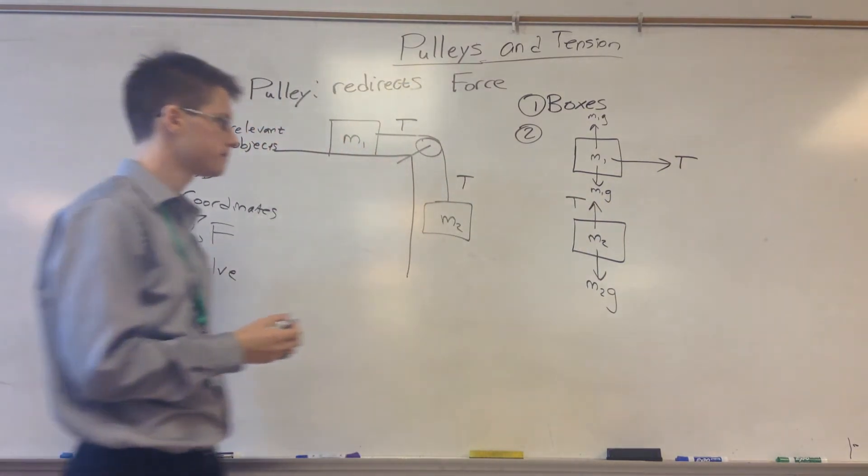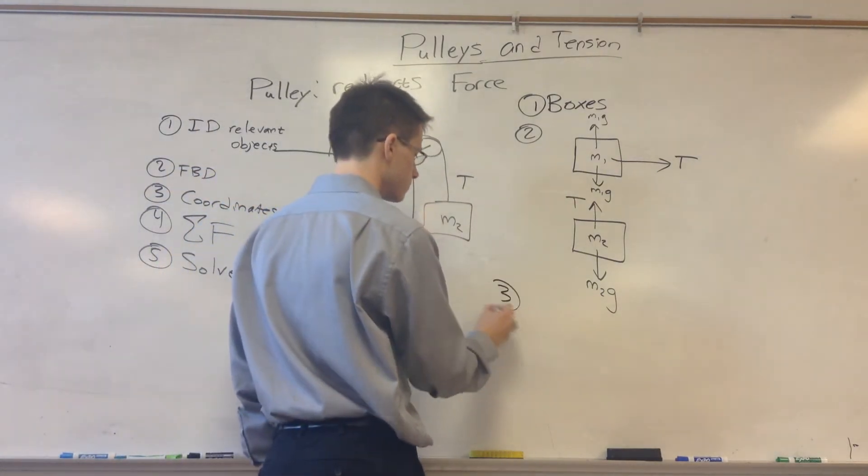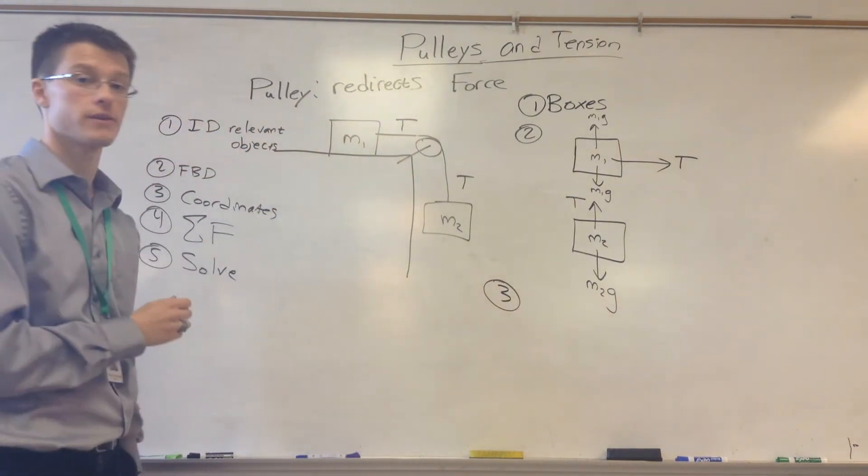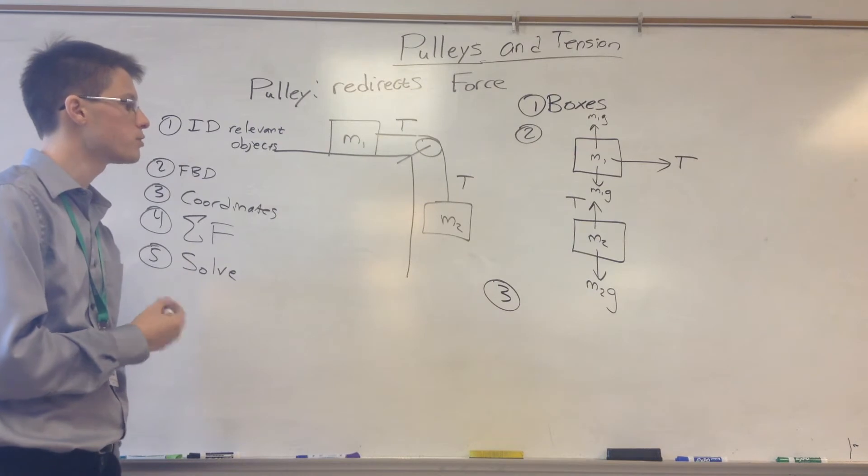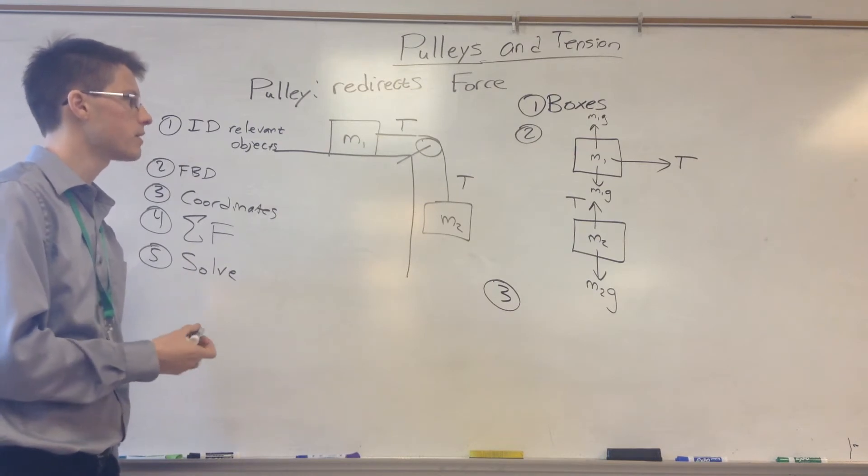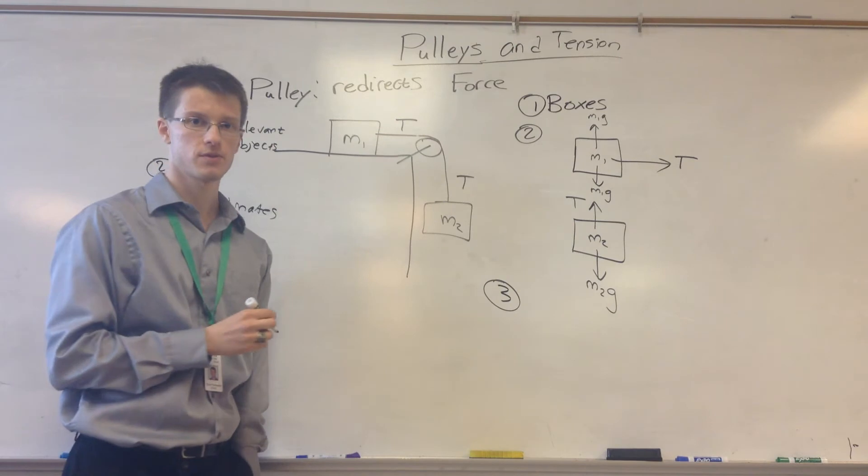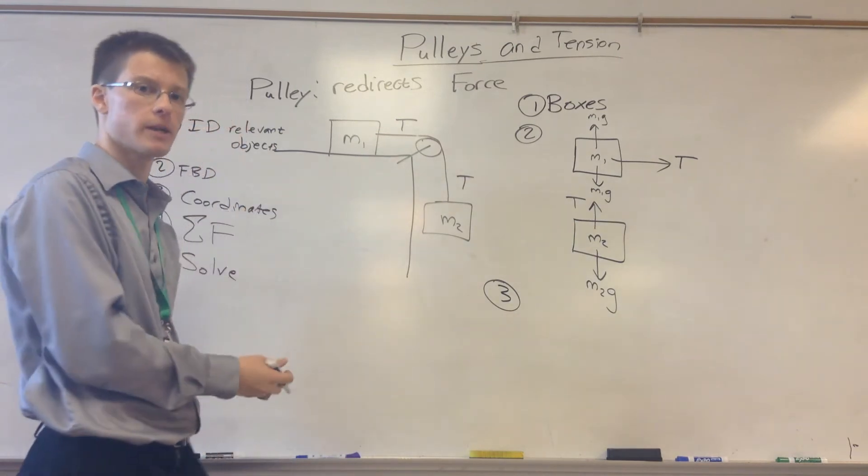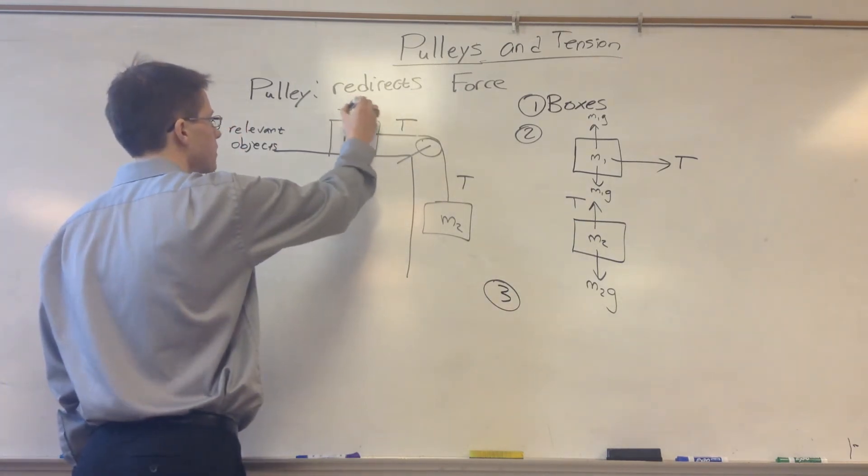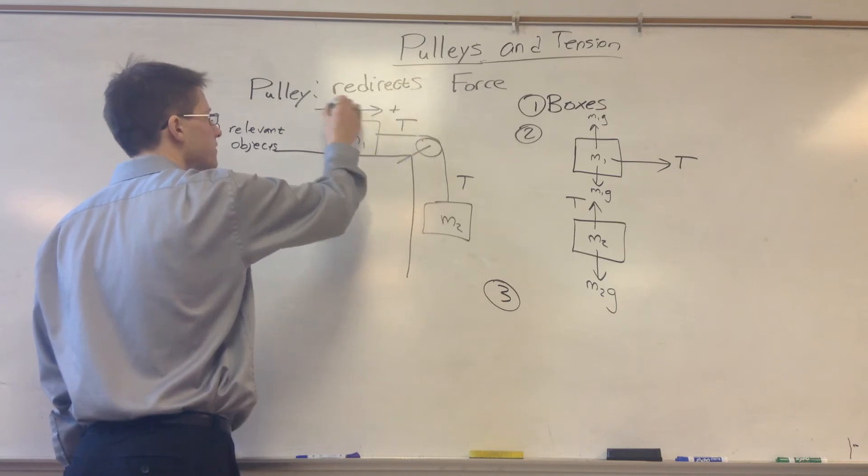For step three, we need to choose our coordinates. When you choose your coordinates for step three, you want to make sure that the tensions have opposite signs. You need to be consistent with the way you set up your coordinates. So let's say we choose right to be positive and left to be negative.